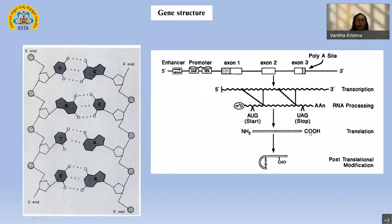Before dwelling into the entire process of RDT, we should first understand how exactly DNA is formed and how a gene is expressed and converted into a protein. The left panel shows DNA — double helical in nature, with two strands running anti-parallel to each other, one strand running from 5' to 3' and the other in the opposite direction. Both strands are held together by basic units called nucleotides.